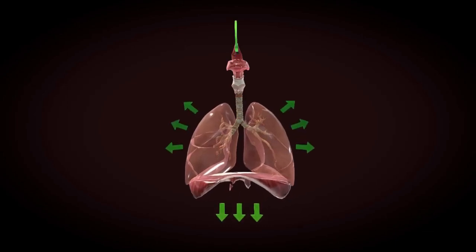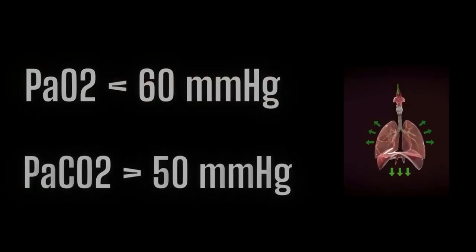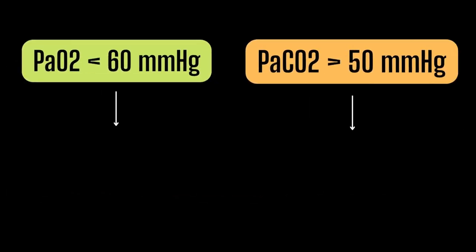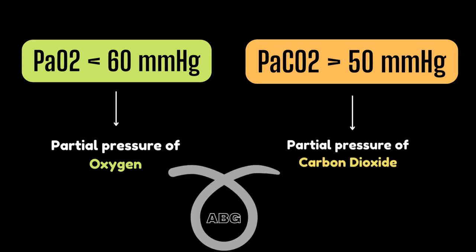Respiratory failure is a clinical condition in which the respiratory system fails to maintain its main function, which is gas exchange, in which PaO2 is lower than 60 mmHg and PaCO2 is higher than 50 mmHg. PaO2 is the partial pressure of oxygen in blood and PaCO2 is the partial pressure of carbon dioxide. Both of these are measured with a test called arterial blood gases. Please refer to our video lesson on PaO2 and PaCO2 in arterial blood gas to learn more.